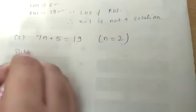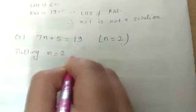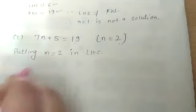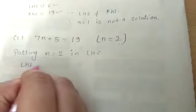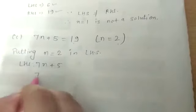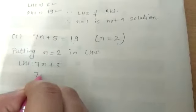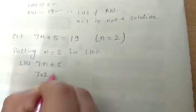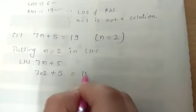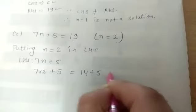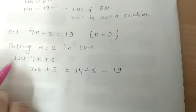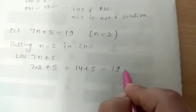So, putting n equals to 2 in LHS. So, in LHS, 7n plus 5. So, 7 at the place of n, you have to put 2 plus 5. We know that 7 times 2 is 14 plus 5, 19. So, after solving LHS, the value we will get is 19.